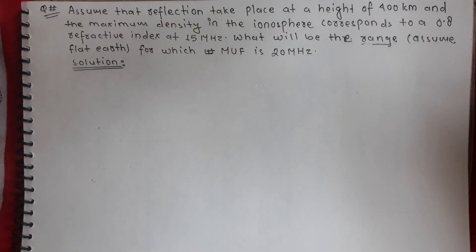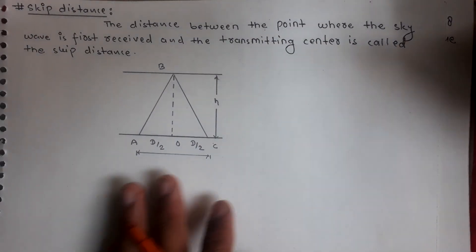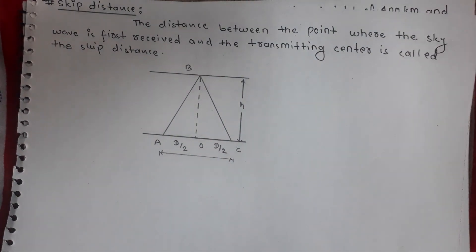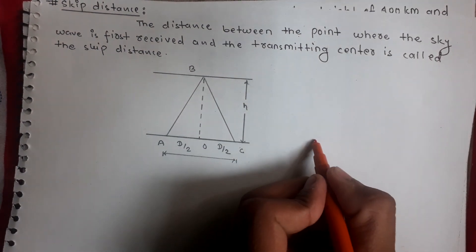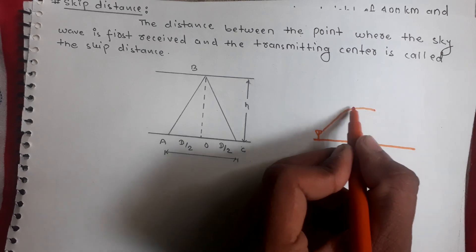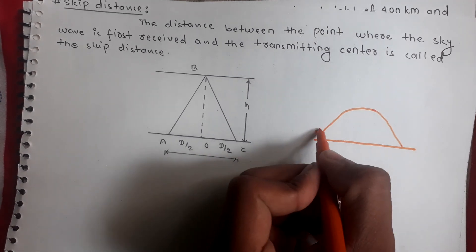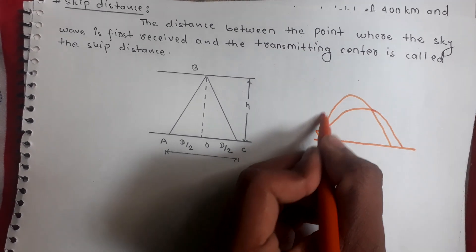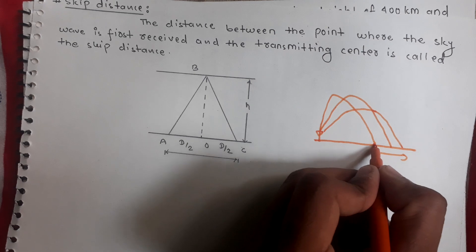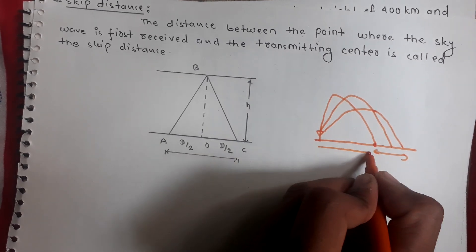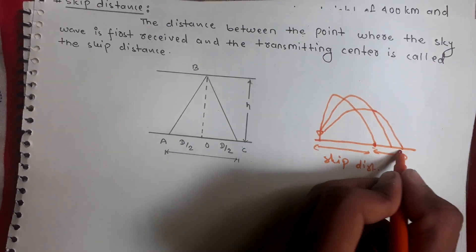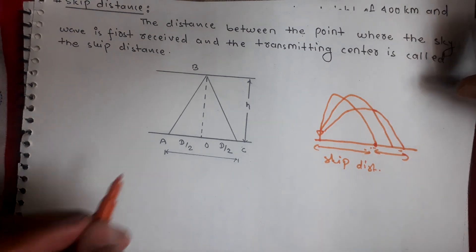Now let's move to skip distance. Skip distance is the distance between the transmitting point and the first point where the sky wave is received back on earth. Suppose this is the earth and I have an antenna here; the wave goes to the ionosphere — this is called the sky wave — and reflects back to the earth. Different waves travel at different angles, and the distance from the antenna to the first received wave is known as the skip distance. This is also called the range of the frequency or range of the distance.